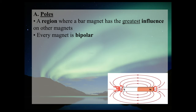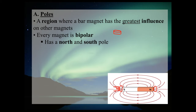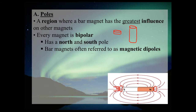Every magnet is bipolar — bipolar just means you have both a north pole and a south pole. One of the magnets in the mini lab was a small cylindrical magnet. It may not be clear where the north and south pole are on it. If you exaggerated the height to make it a really big cylinder, you might be able to make a better guess as to where the north and south poles are. Bar magnets are often referred to as magnetic dipoles — the prefix 'di' makes a reference to two, so it has two poles.